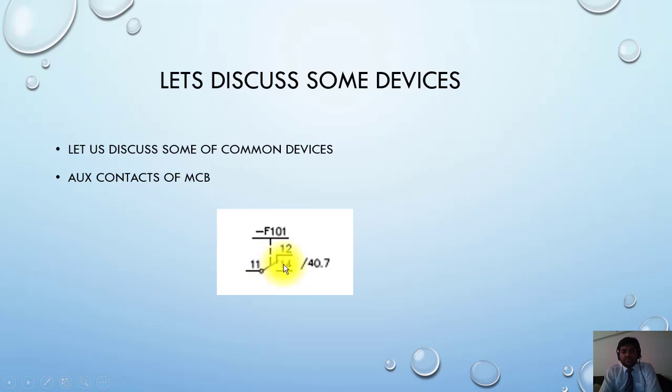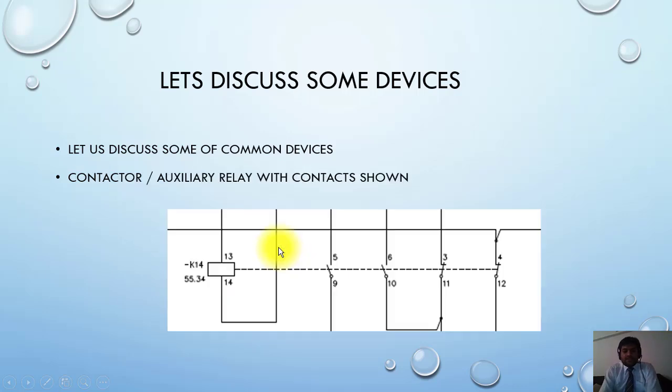Let us see another item which is very common - it is auxiliary relay or a contactor. So this 13 and 14 is the power supply of this contactor or its coil. When this coil is picked up and supply is provided or connected to this relay K14, then this contact will change from open to close.